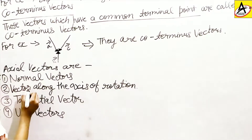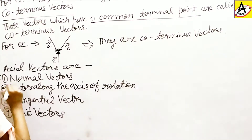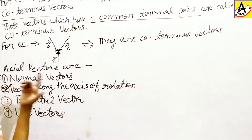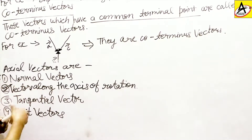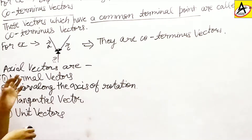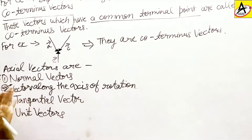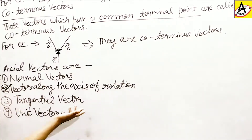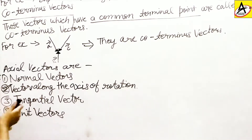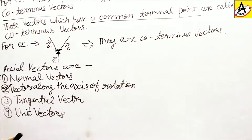The second option — vectors along the axis of rotation — is correct. Axial vectors are not normal vectors; their main work is to represent rotation effects. Tangential vectors are a different type that will be discussed later. Unit vectors are mainly used to find direction, which is different.